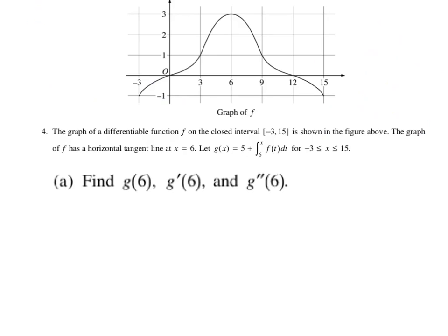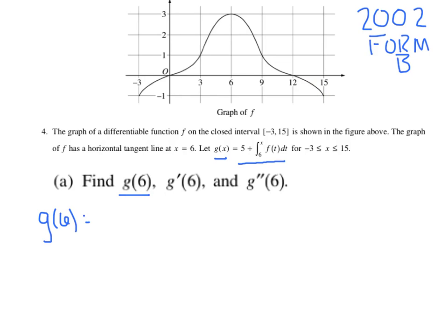We've got another question from 2002, on a different form — 2002 Form B, which is an exam administered in different time zones. It's the same style of question: they introduced g and defined g as an accumulation function. The only difference is they threw in a 5 being added to the integral, but you'll find it doesn't change too much. The other difference is f itself is not linear — it has significantly more curvature. Let's get started with g of 6. By definition, substituting 6 in for x, I get 5 plus the integral from 6 to 6. The bounds are the same, so that integral has a value of 0, and we simply get 5.